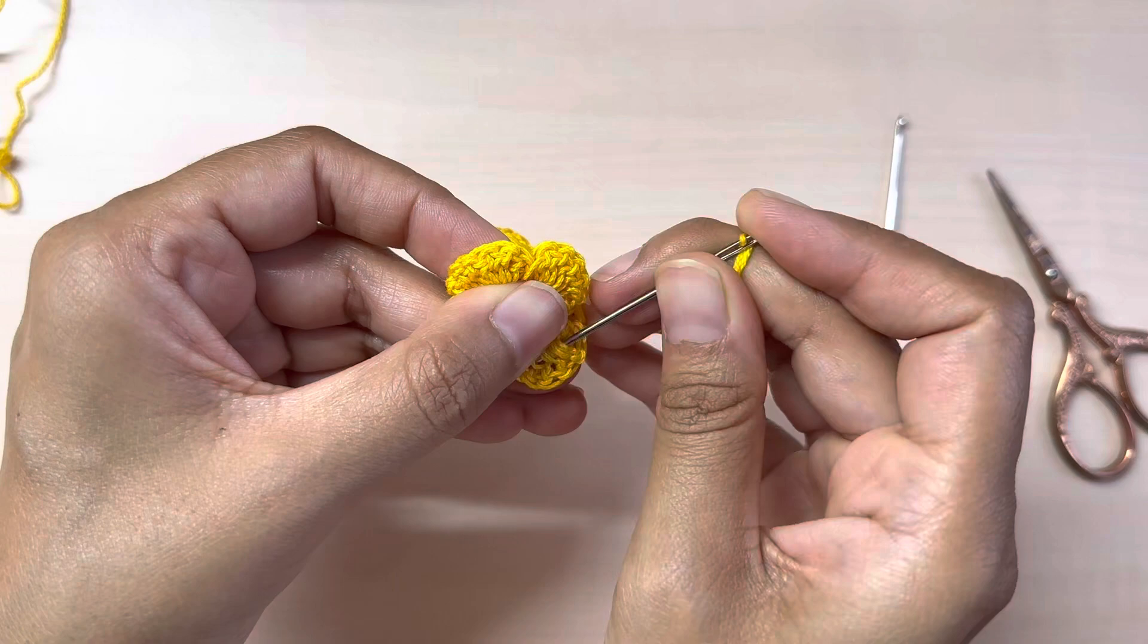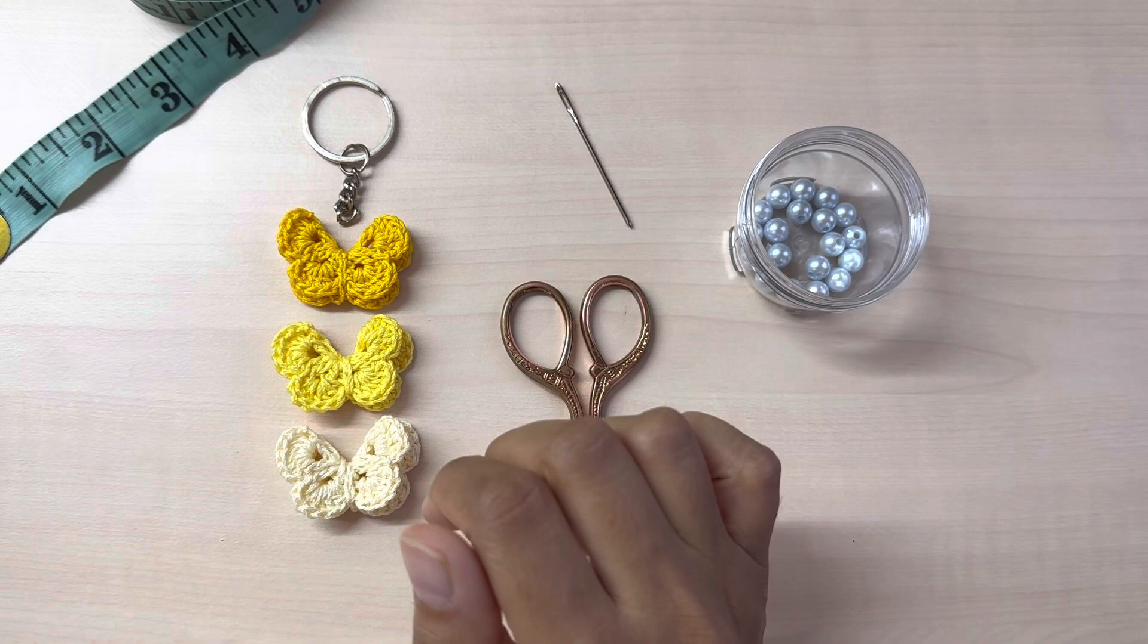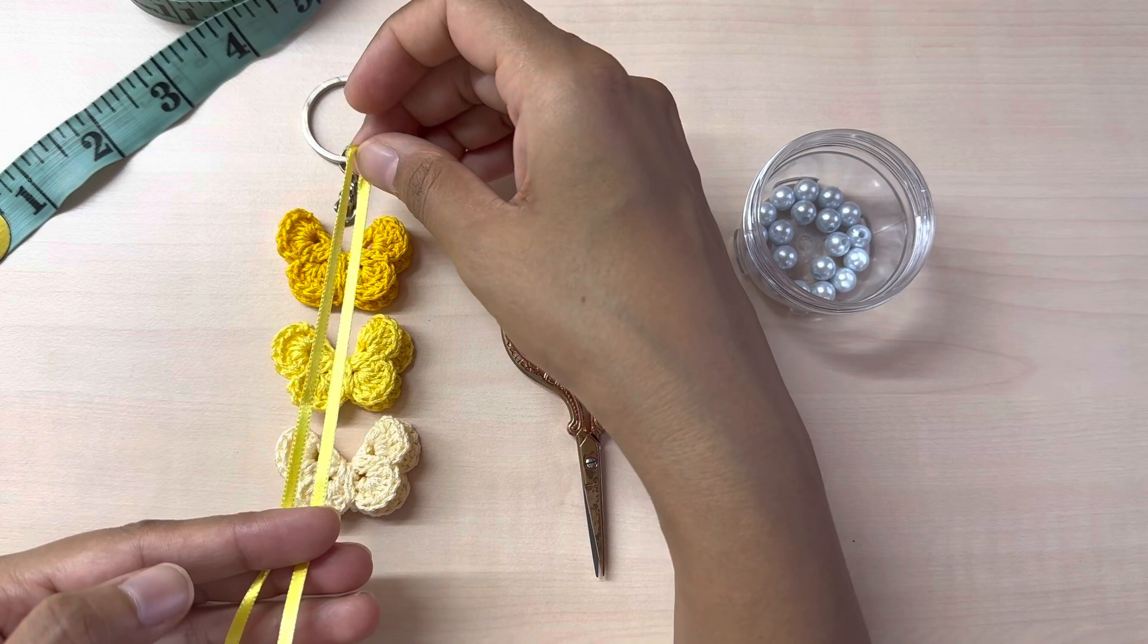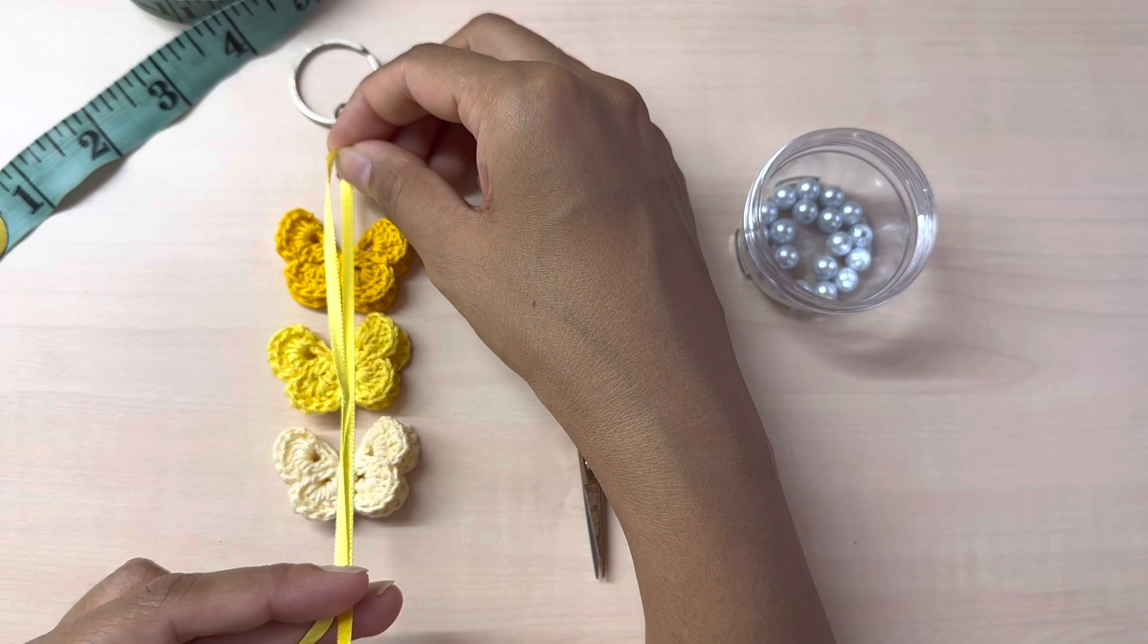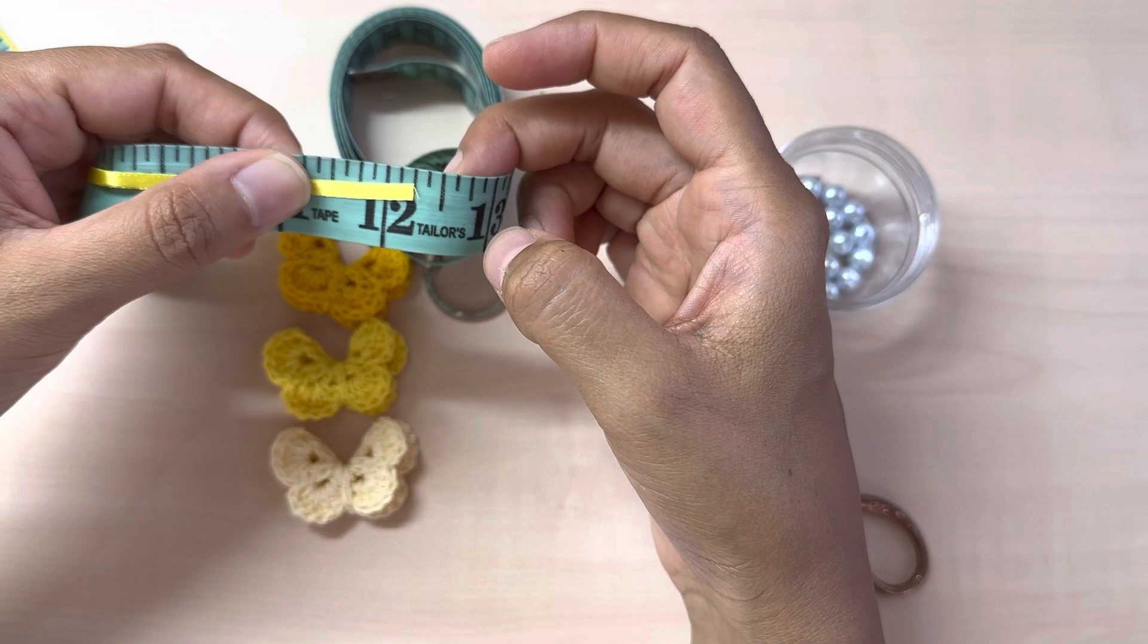Now that my butterflies are ready, I'm just going to place them this way. And in order to decide how much ribbon I'm going to need, I'm going to fold my ribbon in half, and I will also need some space in between for the beads. So you place your ribbon this way. I'm gonna cut about this much. So I've actually cut my ribbon a little more than 12 inches.